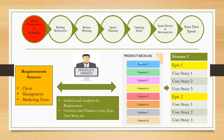A product backlog is a list of features with corresponding epics and user stories. For example, as you can see here, this backlog has eight features, and for feature one there are two epics and three user stories for each epic. So all features in the backlog will have epics, and for each epic there will be some user stories.